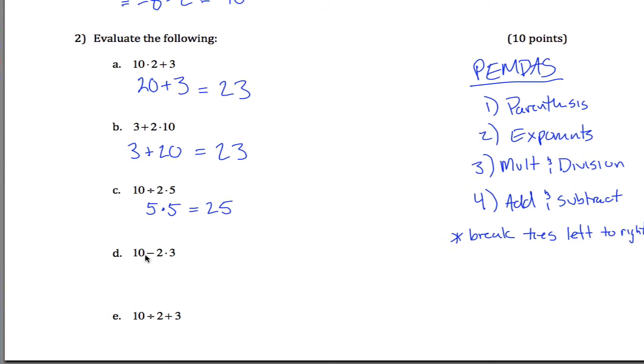Part D here. Now I want 10 minus 2 times 3. Again, multiplication before addition and subtraction. I want to do 2 times 3 before I do 10 minus anything. So 2 times 3 is 6, 10 minus 6 is 4.